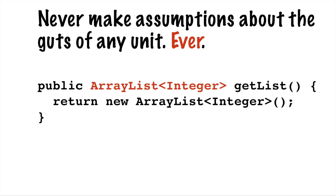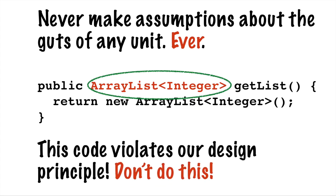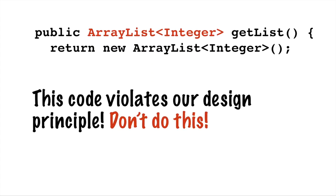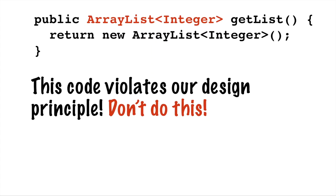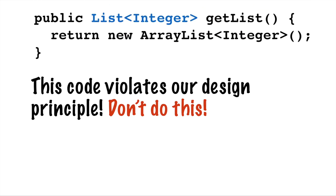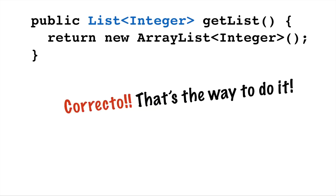Let's take an almost trivially simple example of how we might either violate or follow this design principle. Consider this line of code where the interface — the function signature of this method — returns an ArrayList. This code violates our design principle. Instead of ArrayList, it should just say List. That's because ArrayList is a specific implementation of the interface List. Never make any assumptions about the guts of any code — ever.